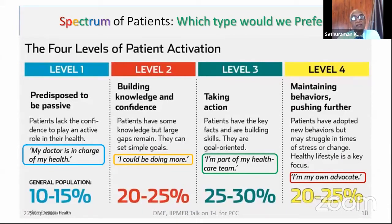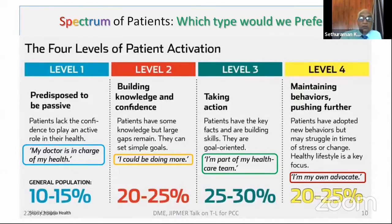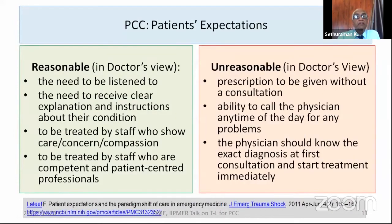Now the reverse: what about the patients that medical professionals prefer? Would you like the first group — level one — who are very passive and say 'my doctor is in charge of my health'? Or would you prefer someone trying to become a little more accountable for self-care — level two? Or level three, where they actively participate as part of the healthcare team? Level four is 'I am my own advocate' — totally autonomous individuals. We get all sorts of patients and we have to align ourselves to communicate and give patient care regardless. It is ideal to have level three for the ideal therapeutic relationship.